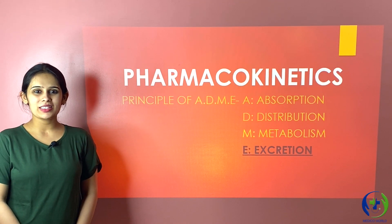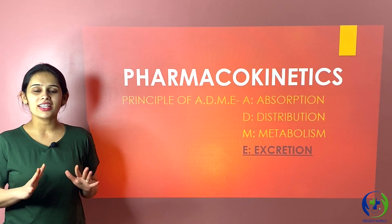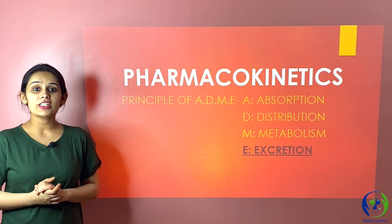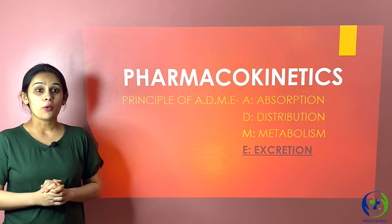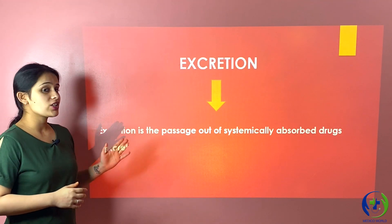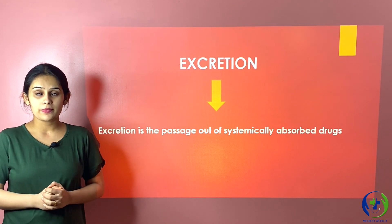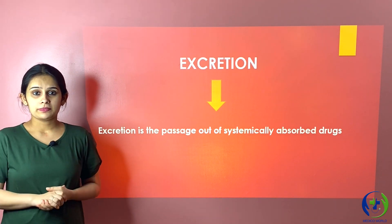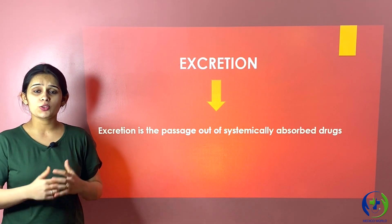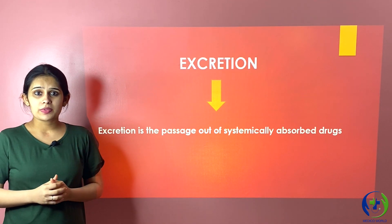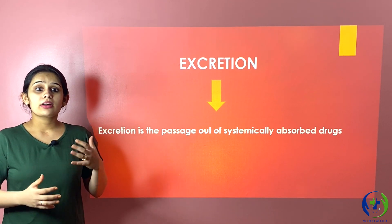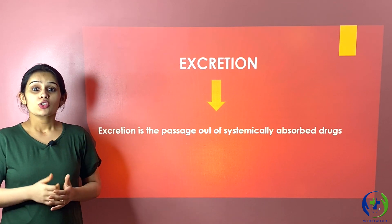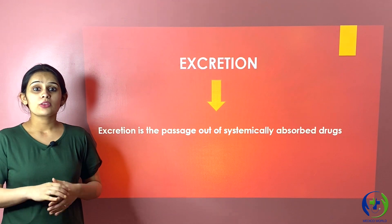Hello everyone, we are back with the topic pharmacokinetics, and finally we have reached the fourth pillar of pharmacokinetics, that is excretion. In this video we will be studying about excretion of drugs. Excretion is the passage out of systemically absorbed drugs — the drugs which have been systemically absorbed get eliminated out of the body. Excretion needs to take place because a drug is a foreign substance and we can't keep it for a longer duration in our body, as it will produce its own toxicity.